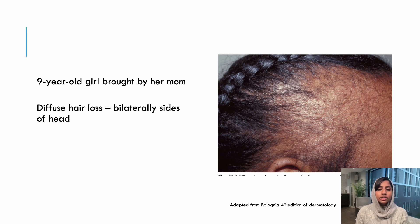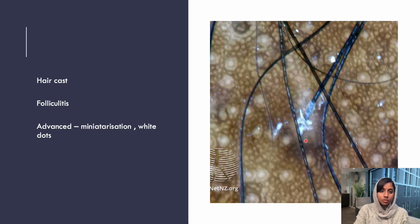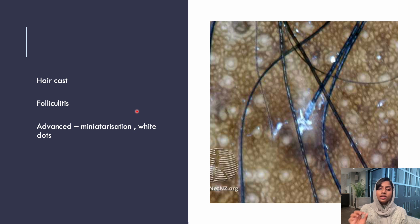The next scenario: a nine-year-old girl is brought with complaints of diffuse hair loss bilaterally on the sides of the scalp — this can be tractional alopecia. On trichoscopy, you can again see perifollicular scaling and hair casts. Features of folliculitis can also be seen. In advanced cases, there can be miniaturization, which is a classical feature of androgenetic alopecia, as well as white dots.